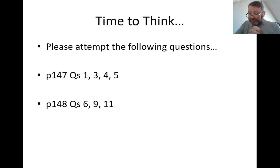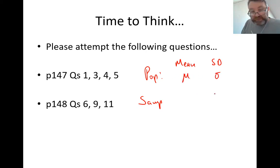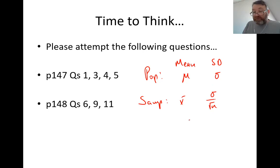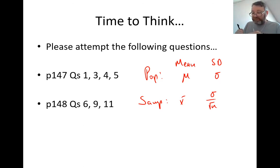To recap: for a population, the mean is μ and the standard deviation is σ. For a sample, the mean is x̄ (with the same value as μ) and the standard deviation is σ/√n, where n is the number of people in the sample. When reading questions, listen carefully for the terms 'population' or 'sample', collect those four pieces of data, and if you need any help, don't hesitate to ask.